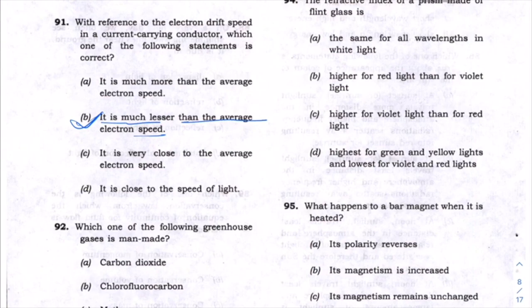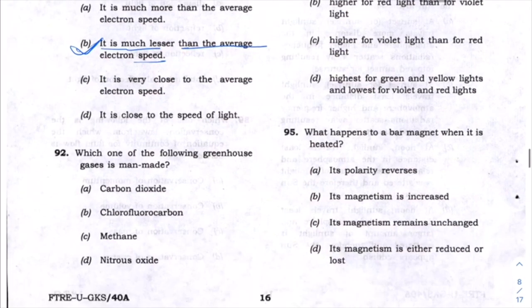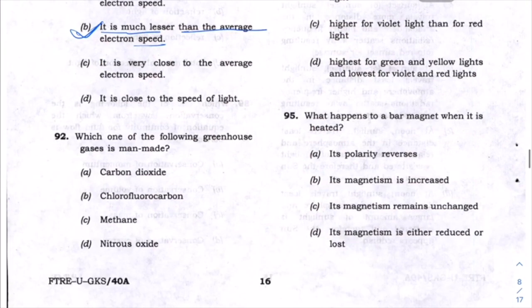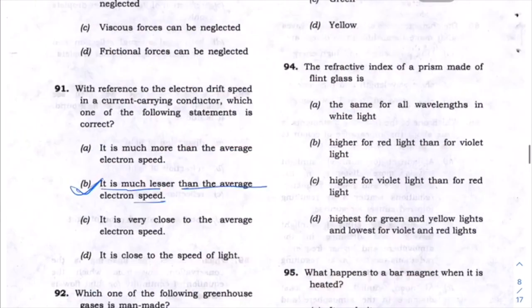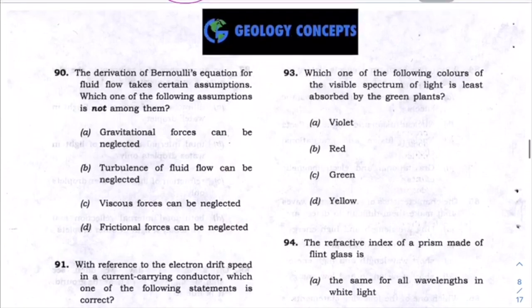Which greenhouse gas is man-made? Carbon dioxide, methane, and nitrous oxide all occur naturally. Only chlorofluorocarbon (CFC) has been added by humans, so CFC is the answer.